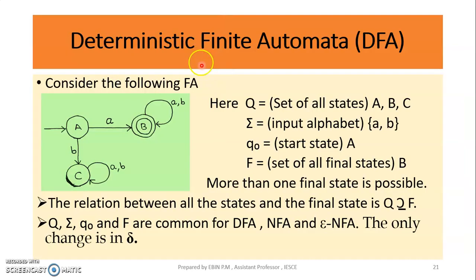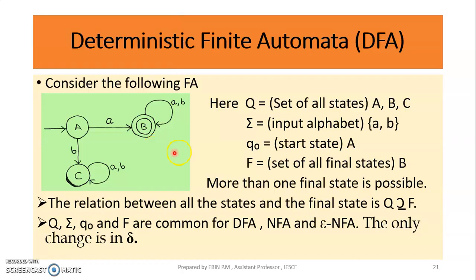The first one is deterministic finite automata, DFA. We are doing a finite automata using five tuples. Q is the set of all states. The set of all states is {A, B, C} — so A, B, C are states.